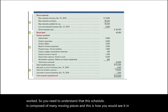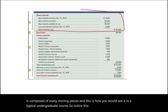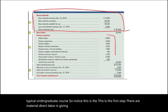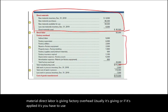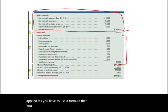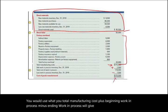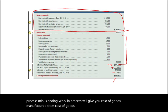This is how you would see the schedule in a typical undergraduate course. The first step is raw material; direct labor is given; factory overhead is given or, if applied, you use a formula. Then total manufacturing cost plus beginning work in process minus ending work in process gives you cost of goods manufactured. From cost of goods manufactured you can figure out cost of goods sold.